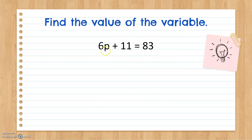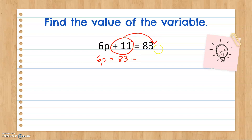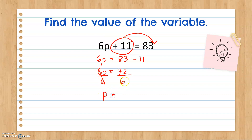Let's try to use transposition in our next examples. Find the value of P in the equation 6P plus 11 equals 83. Our goal is to isolate the variable on the left side. So first, we transpose positive 11 to the other side — it becomes negative 11. So 6P equals 83 minus 11, which equals 72. We only need to find P, so we divide both sides by 6. 6 divided by 6 is 1, leaving P alone. 72 divided by 6 gives us 12. Therefore, the value of P is 12.